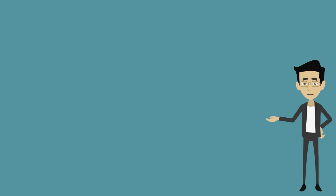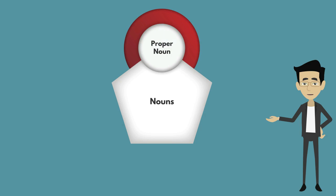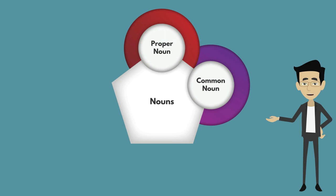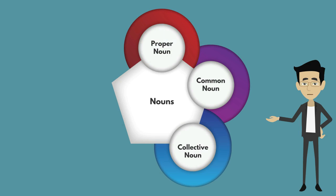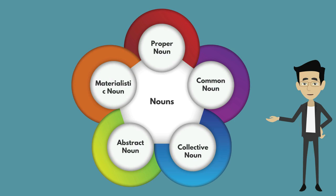Generally, there are 5 types of nouns. They are: proper noun, common noun, collective noun, abstract noun, and material noun.